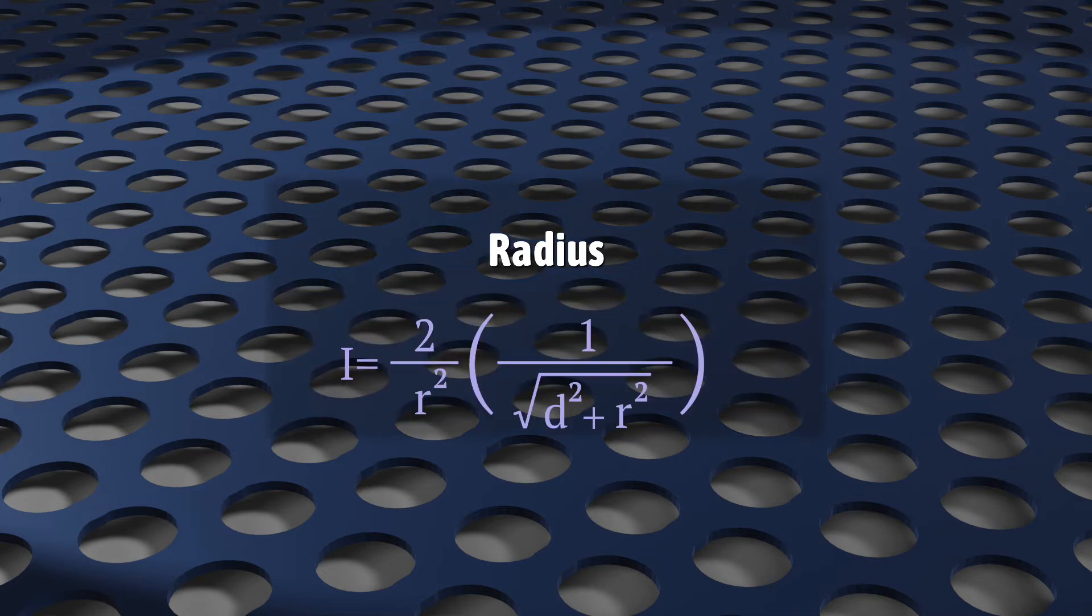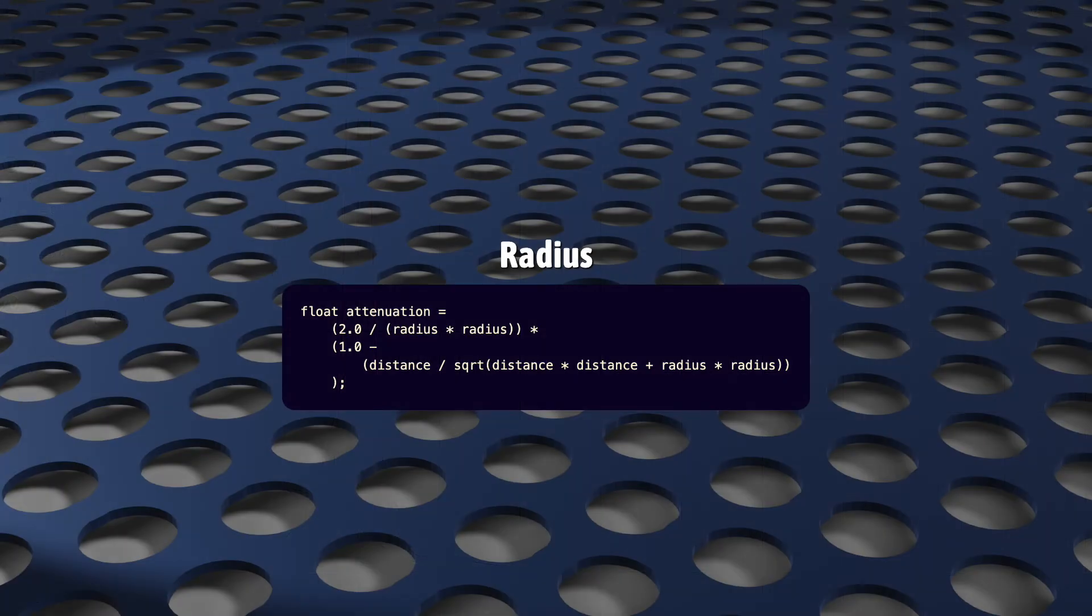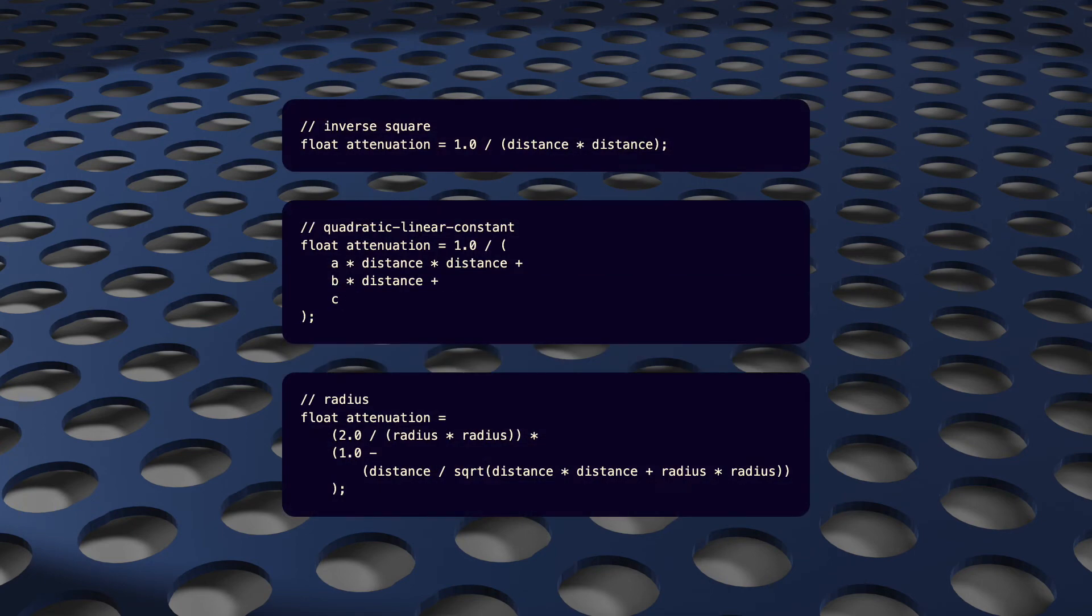And here's the last attenuation function I'll show you. This is a mathematical approximation, not of a point light, but of a disk of light, a light with a radius, R. It's not as flexible as the constant linear quadratic function, but a lot of people insist that this is the most physically realistic and satisfying attenuation function of the three. Here's what that function looks like in GLSL. I recommend that you try out all three and experiment with the differences.